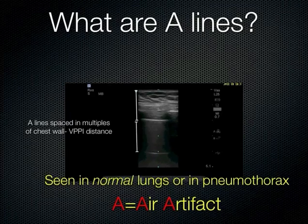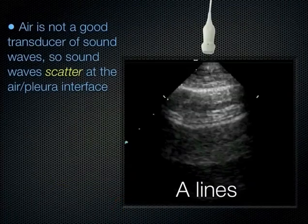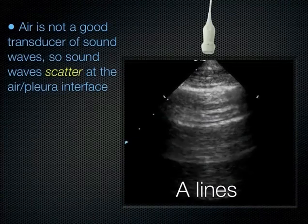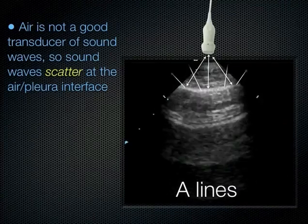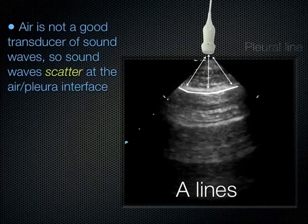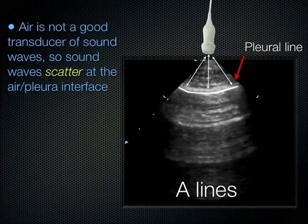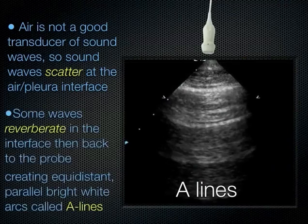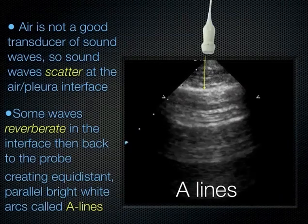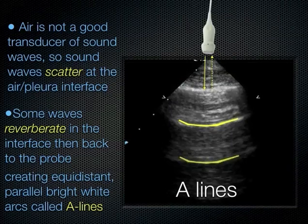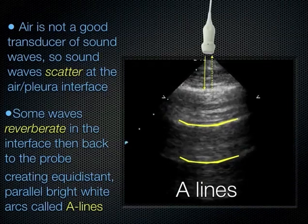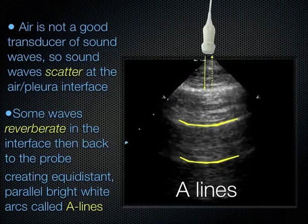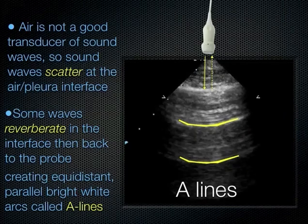Air is not a good transducer of sound. Sound reaches the pleural line and most scatters back. Some waves reach back to the probe in an organized fashion to create an image of the pleural line. Others get stuck in the pleural line, reverberate, and reach back later — interpreted as lines that are lower. Your lungs are not striped; this is artifact created by the air and the acoustic difference at the pleural line. Normal lung will have A-lines, and pneumothorax will also have A-lines — so A-lines do not necessarily mean normal.